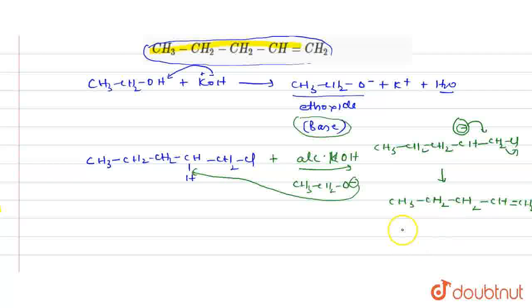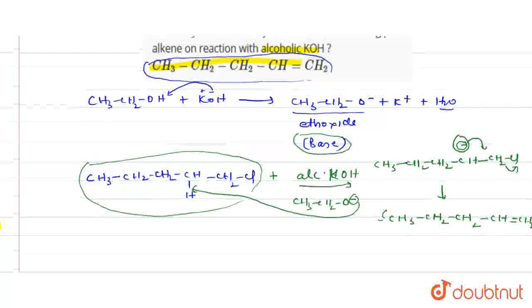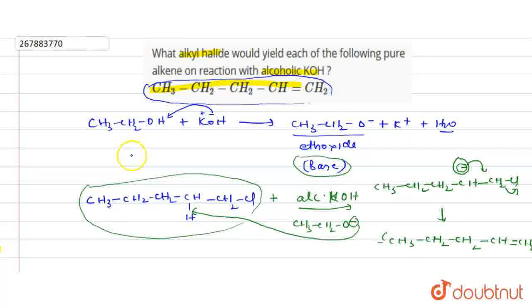So basically what happened in this reaction? We started with this haloalkane, 1-chloropentane. We started with alkyl halide. And the question was asking which alkyl halide we will use so that we will produce this particular compound.